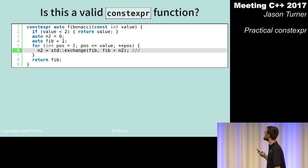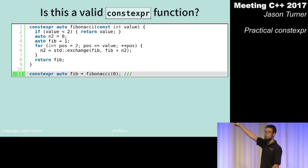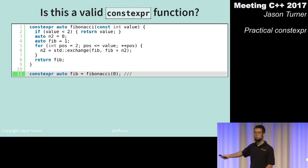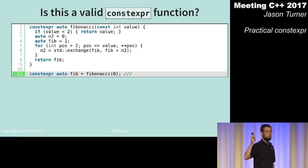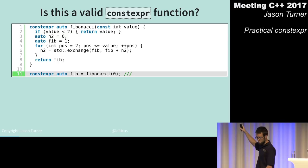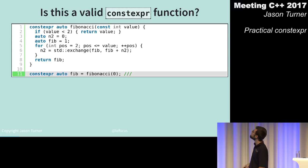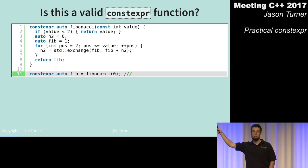We're calling it with fibonacci(0) and assigning to a constexpr value, so we are evaluating in a constexpr context. Both the zeroth and first case execute line 2, returning the value because it's less than 2. As soon as the value equals 2, we have to deal with std::exchange on line 6.